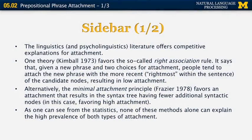It turns out that the linguistics literature, and in particular psycholinguistics, has disagreement on how humans process attachment. There is one theory by Kimball that favors the so-called right association rule: given a new phrase and two choices of attachment, people tend to attach the new phrase to the most recent, rightmost portion of the sentence — favoring low attachment. However, there's an alternative called the minimal attachment principle by Frazier, which favors an attachment that results in the syntactic tree having fewer additional nodes, thus favoring high attachment. In practice, neither theory is correct — there are instances of both high and low attachment in real human text.